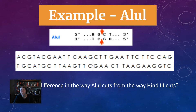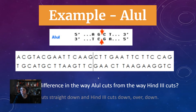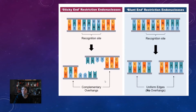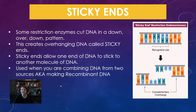This is a little different from the way HIND3 cuts, because Lull cuts straight down instead of down, over, and down. Because there are two ways that restriction enzymes can cut, there are two types of ends we can end up with. The first end is called a sticky end. A sticky end is created when your restriction enzyme cuts down, over, and down, creating overhanging DNA that can stick to other DNA.